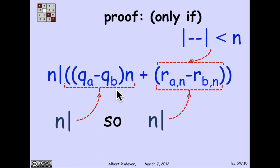So n divides r_a minus the remainder of a divided by n from b divided by n. But remember, these are remainders. So that means that they're both in the interval from 0 to n minus 1 inclusive. And the distance between them has got to be less than n.